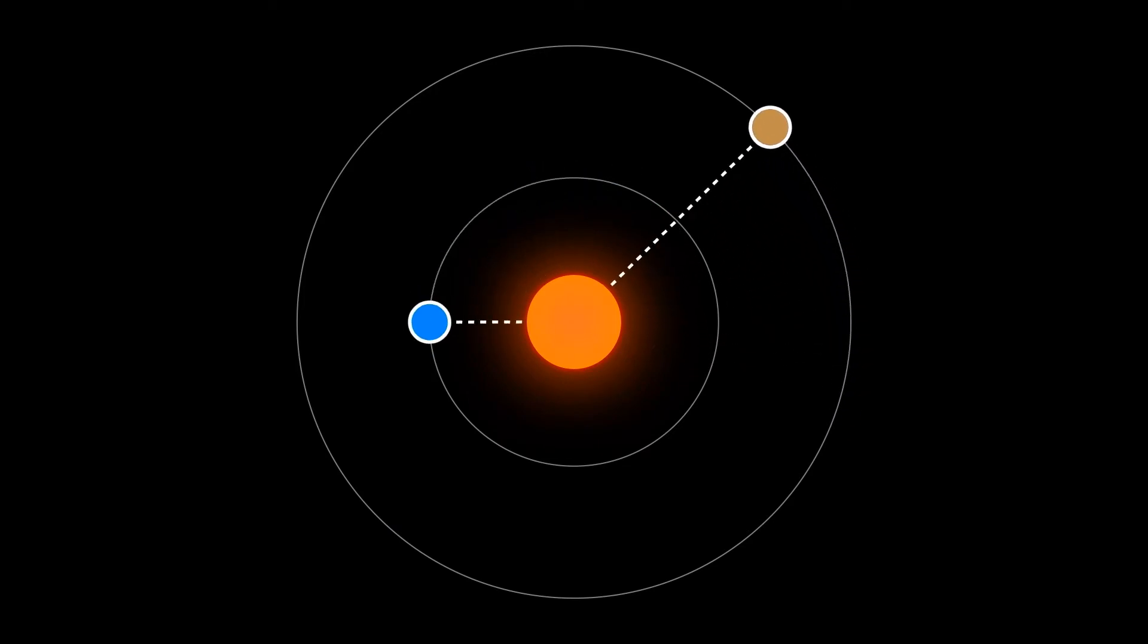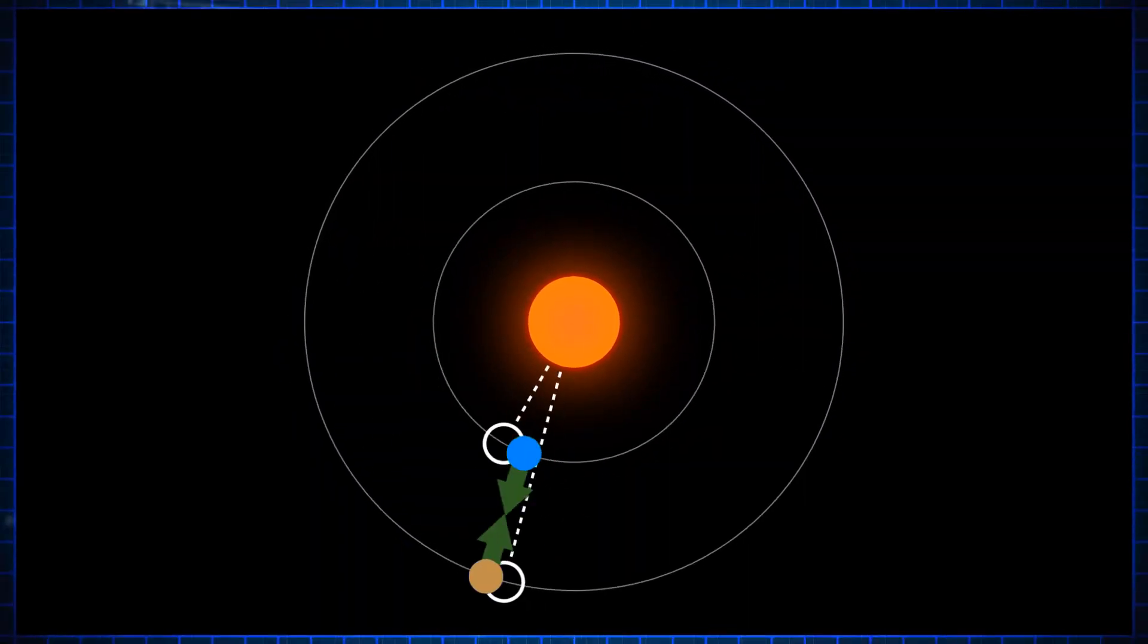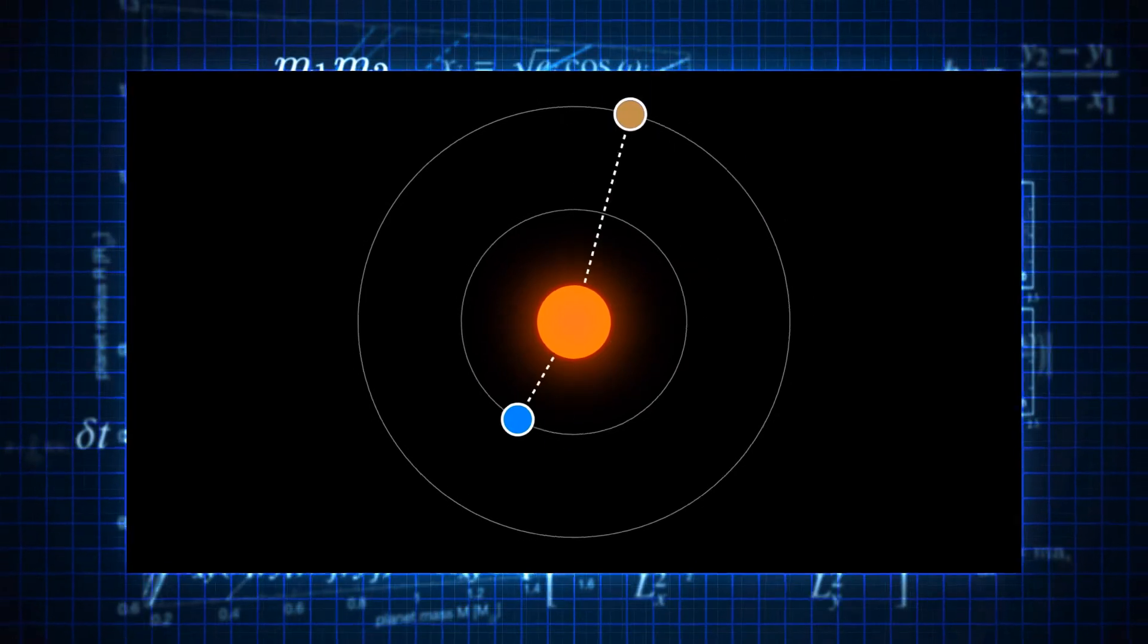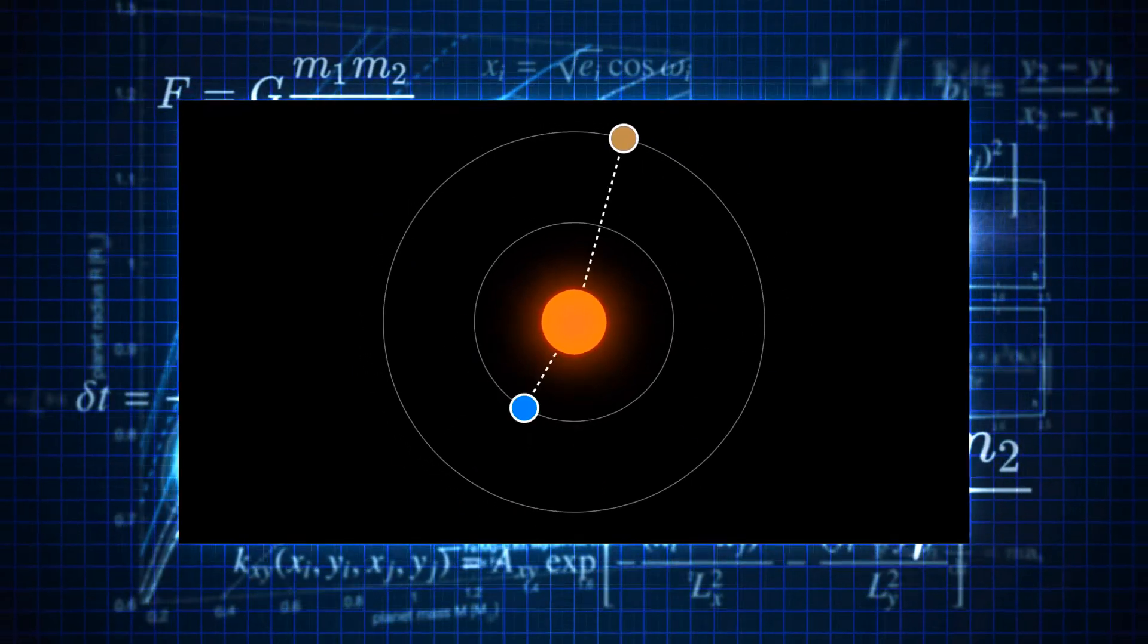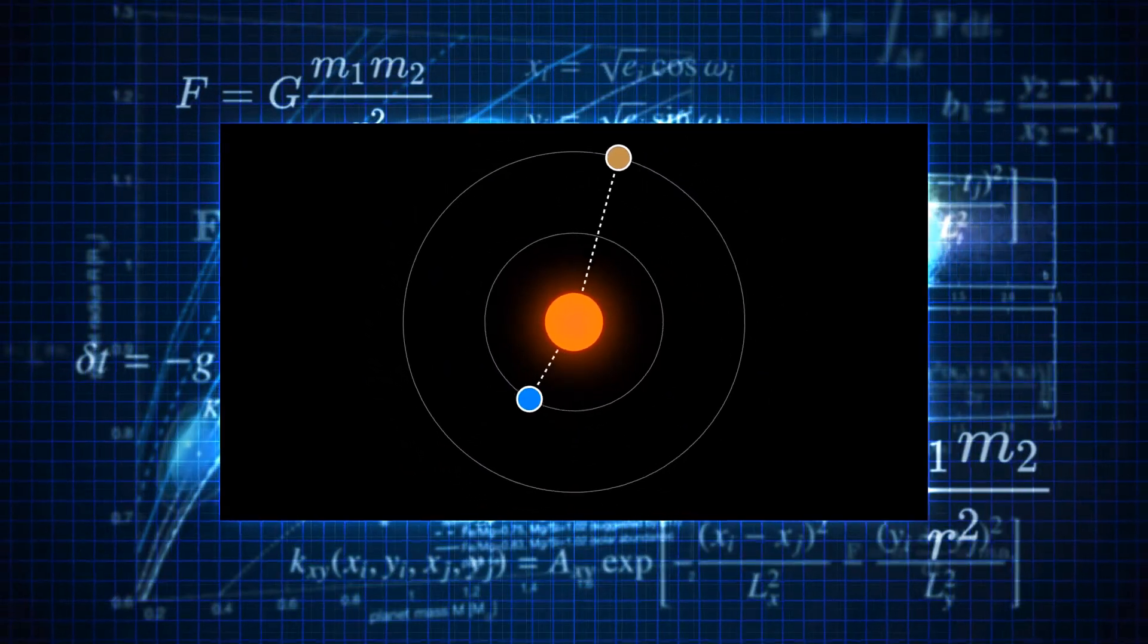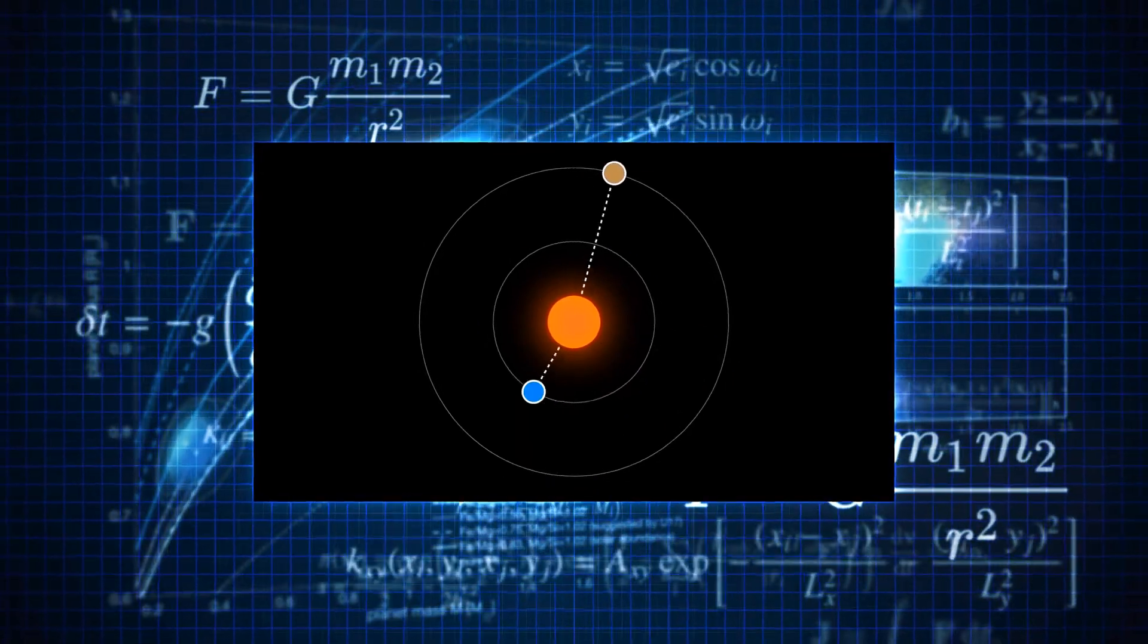If we observe the timing variations of the planets over many orbits, astronomers can, using a lot of math, calculate just how much mass each planet must have to create these schedule glitches.